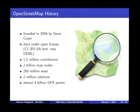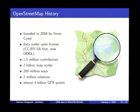This project was started by Steve Coast in the UK almost 10 years ago. It's freely licensed geographic data under an open license. It has over many contributors by now — more than just active ones, but that's the number of accounts that have signed up. By now we have over 2 billion map nodes — points in the database — and we've had to switch to 64-bit IDs lately because we were running out of 32-bit ones.